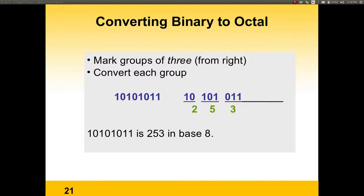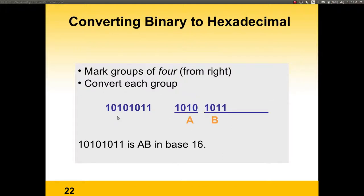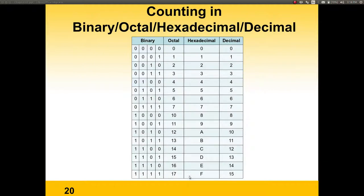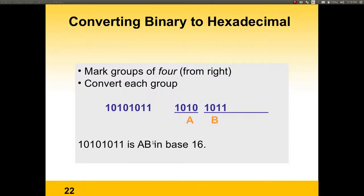For binary to hexadecimal, we break the binary number into groups of four digits, because one hexadecimal digit requires four binary digits. So we break into two groups: 1010 and 1011. 1011 is B and 1010 is A. Therefore, this binary number is equal to AB in base 16, or hexadecimal.